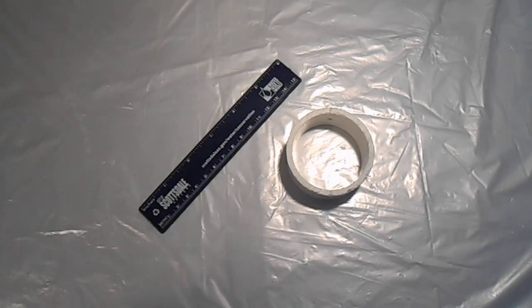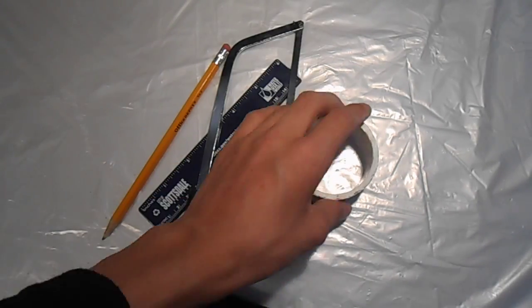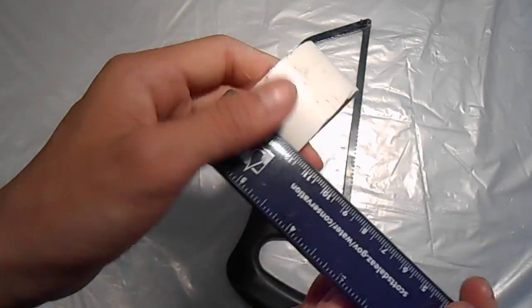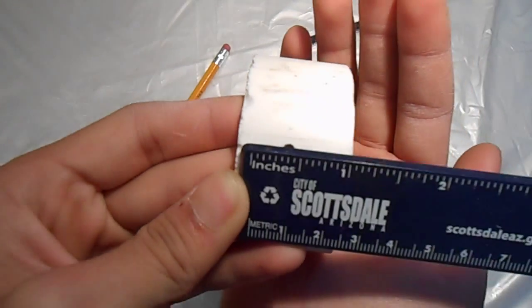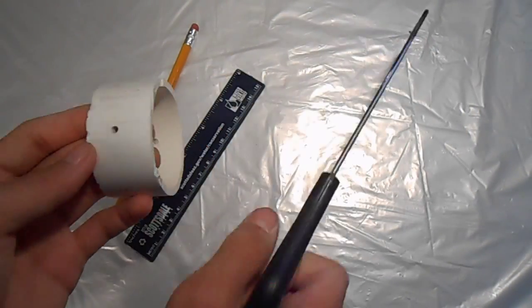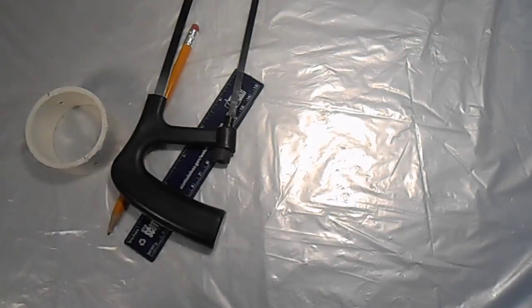Step number three. Take your two-inch PVC pipe, and your ruler, and your pencil, and the saw. So the PVC pipe cutters won't work on this. This pipe is too big. So you want to measure about one inch. After you measure that, you want to mark it with your pencil, and you want to cut it with your saw. Be very careful while doing this.